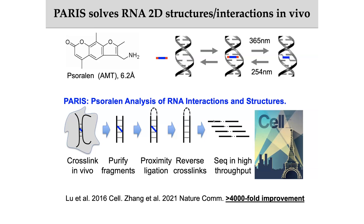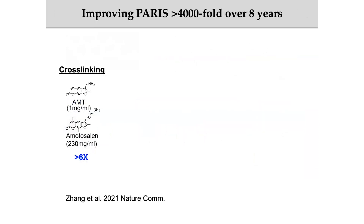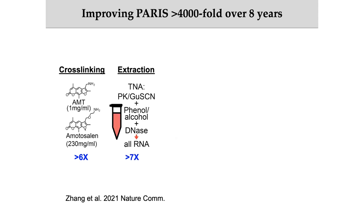This is the first generation of our method, published in Cell. Two years ago, we also optimized the whole process. First, we synthesized a new cross-linker called hydroxymethyl psoralen, giving us more than six-fold improvement in cross-linking efficiency. We also developed a new extraction method called the Total Nucleotide extraction method, or TN method, which gives us around seven-fold improvement in purifying the cross-linked RNA.